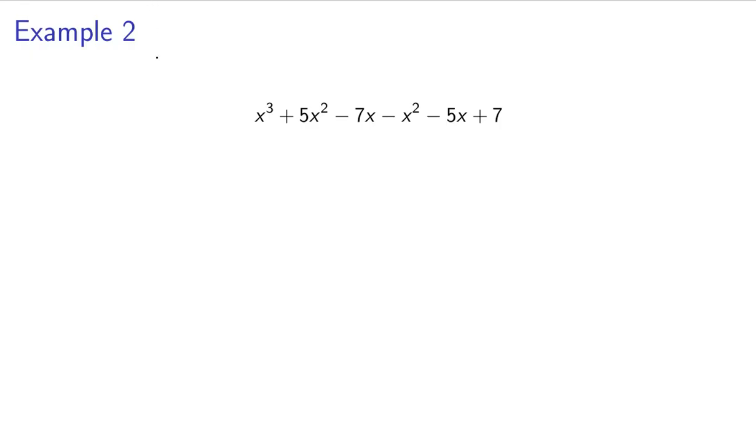Now example 2. So we have quite a few more terms here to deal with. x cubed plus 5x squared minus 7x minus x squared minus 5x plus 7. I always like to recopy the problem so I don't mess up whatever we have here. So now there's only one, oh also this is also from the previous video. We only have one x cubed term, excuse me. And so that means there's nothing left to combine. So we're done with that.